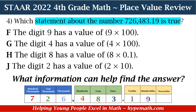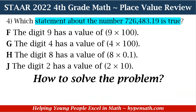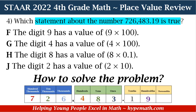Going back to our place value chart, we put our number in their respective places. We have a 7 in the hundred thousands place, a 2 in the ten thousands place, a 6 in the thousands place, a 4 in the hundreds place, an 8 in the tens place, a 3 in the ones place, a 1 in the tenths place, and a 9 in the hundredths place. This is the information that can help find the answer. Now we can compare the answer choices with what we know are the different place values to see if they're correct.